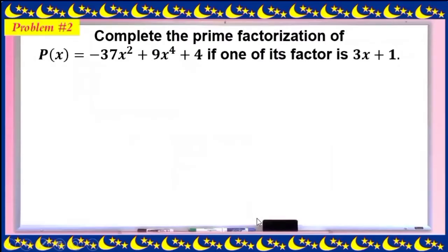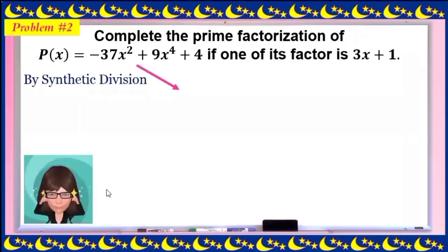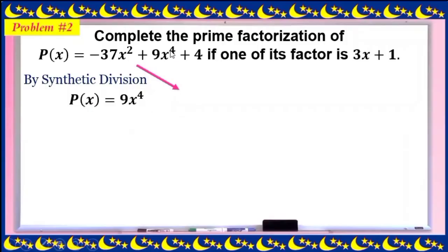Problem Number 2: complete the prime factorization of p(x) = 9x⁴ - 37x² + 4, given that one of its factors is 3x + 1. The degree is 4 since the highest exponent is 4. Arrange in standard form: 9x⁴, then 0x³ (missing), then -37x², then 0x (missing), and constant 4.